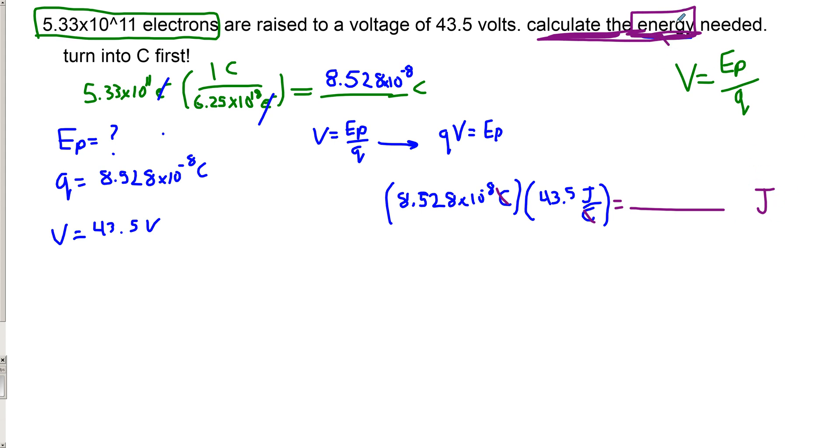So I'm just going to quickly multiply this and we get a very tiny number. We get 3.709 times 10 to the minus 6 joules. So long story short, it doesn't take a lot of energy to move a minuscule, puny number of electrons to 43.5 volts.